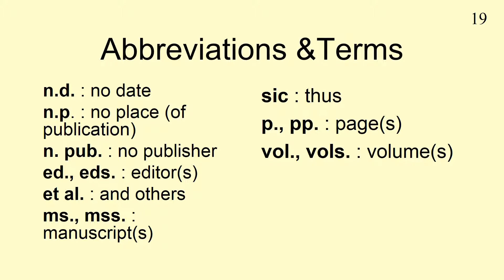'Ed' and 'eds' are abbreviations for editor and editors. 'Et al' is Latin. 'Al' is an abbreviation for the Latin 'alia', which means others. So, 'et al' means 'and others'. Note that since 'al' is an abbreviation, it requires a full stop. 'Et' is not an abbreviation, so it is not followed by a full stop.